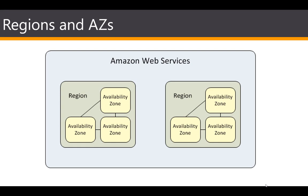You can pick which region and availability zone to launch your EC2 instance into. When launching, you can either let AWS select a default availability zone or choose your own. It's always recommended to let AWS choose the availability zone within the region, because they select the most efficient one based on load across availability zones — information that isn't available to us. But you do have the option to select a specific availability zone.